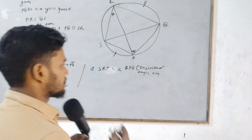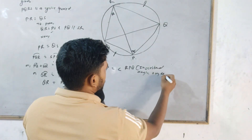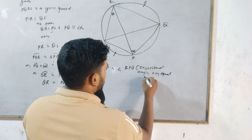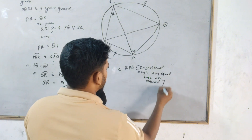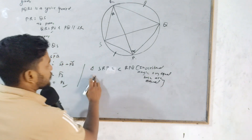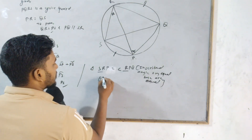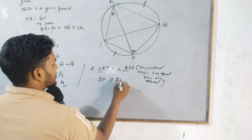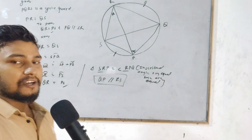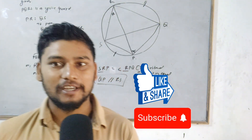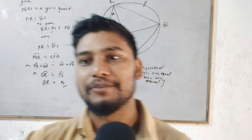Inscribed angle on equal arcs are equal. Therefore QP is parallel to RS. Like, subscribe and see you in the next video.